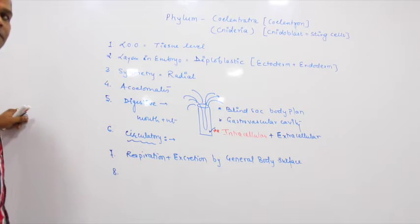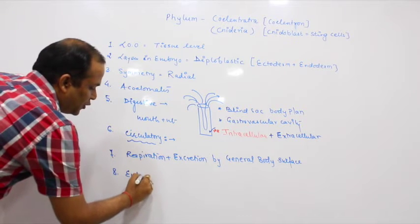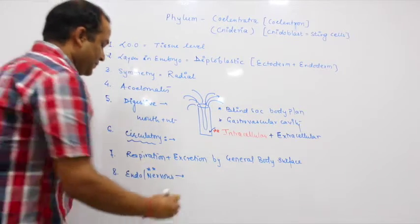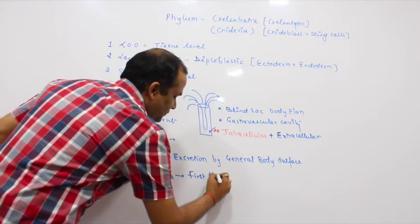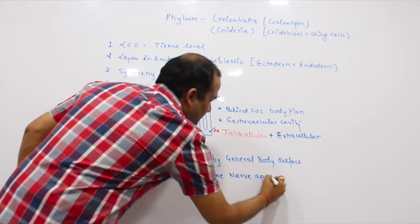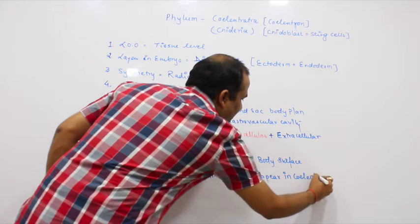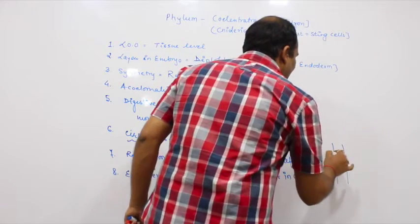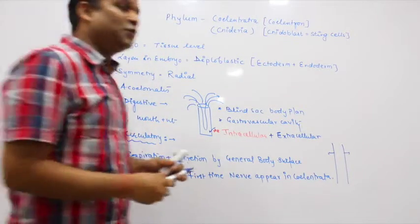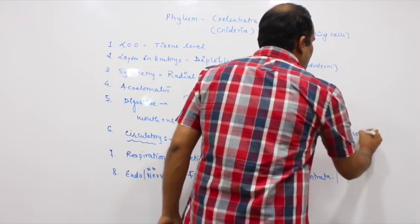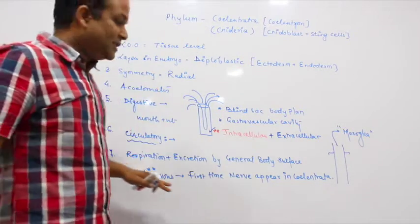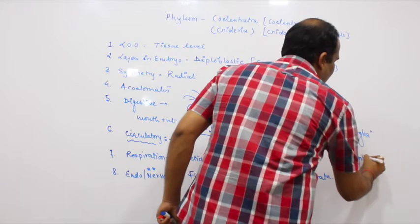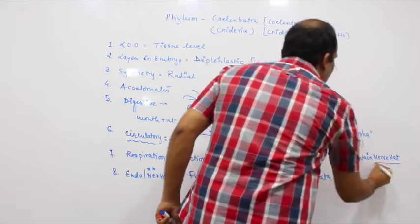Next one is nervous system - very important, double star. First time nerves appear in cnidarians. Where are these nerve nets present? These nerve nets are present in the layer between the ectoderm and endoderm. The space is called mesoglea. The mesoglea term is used in cnidarians, and mesenchyme term is used in porifera. This mesoglea contains nerve nets.